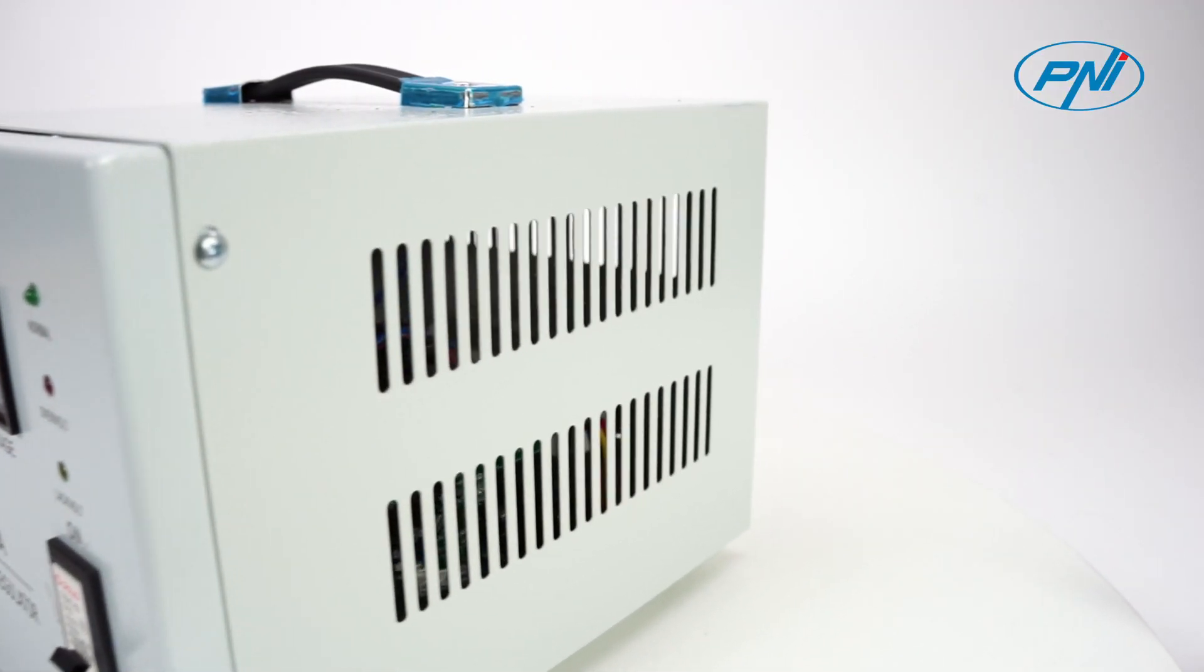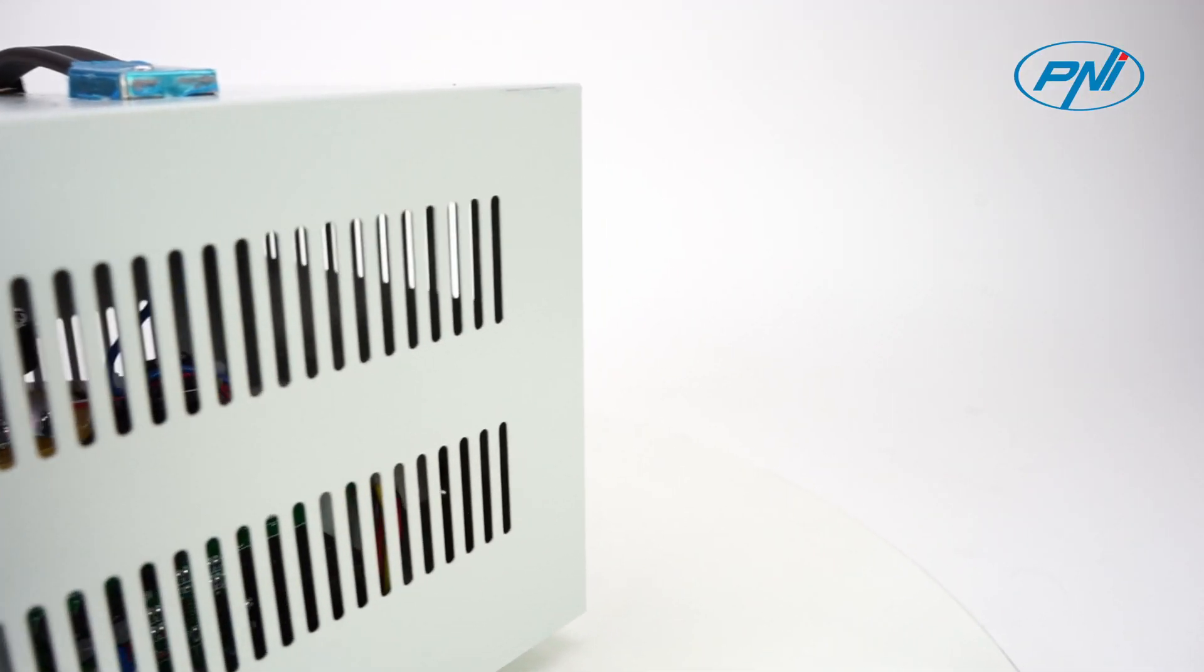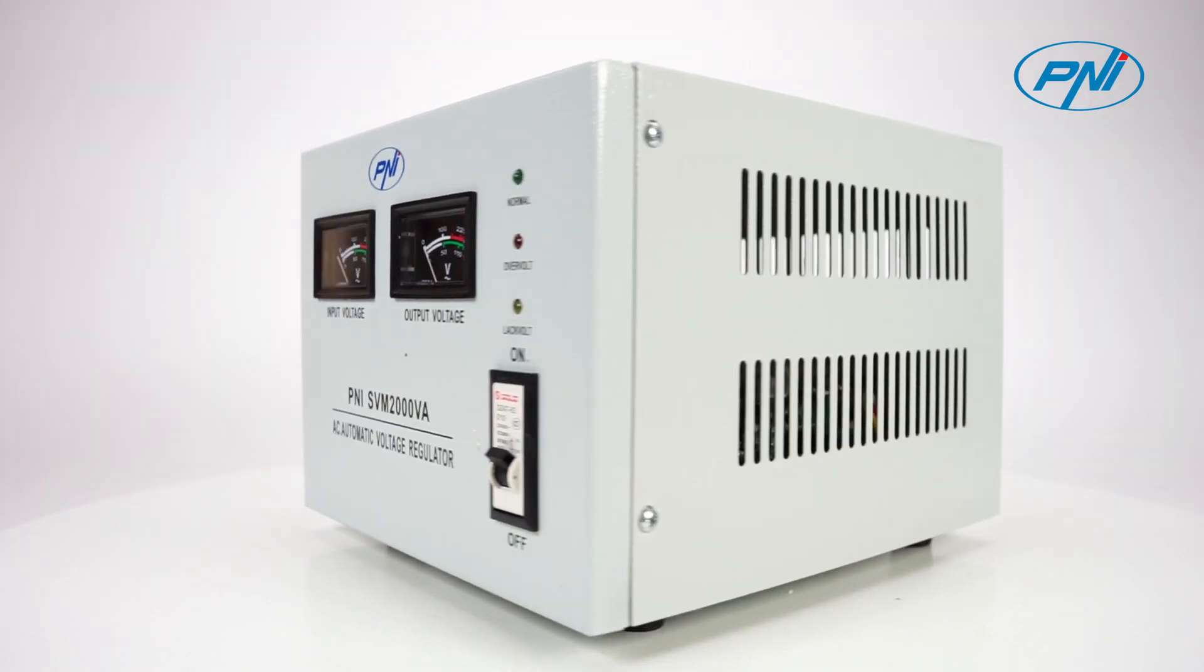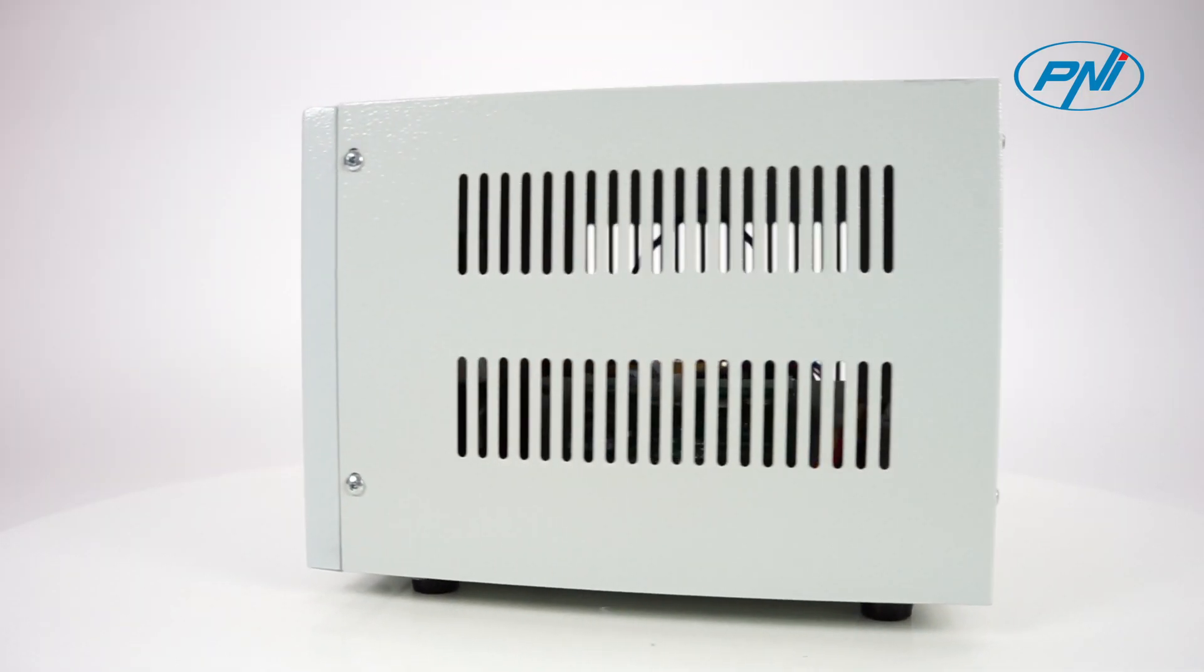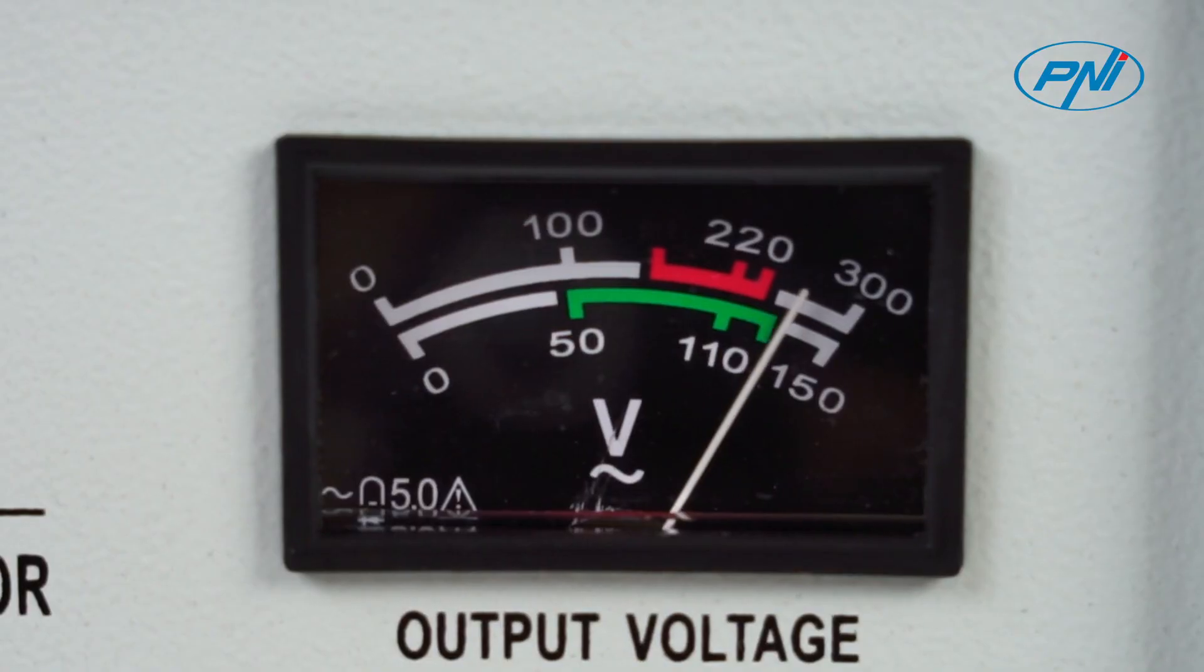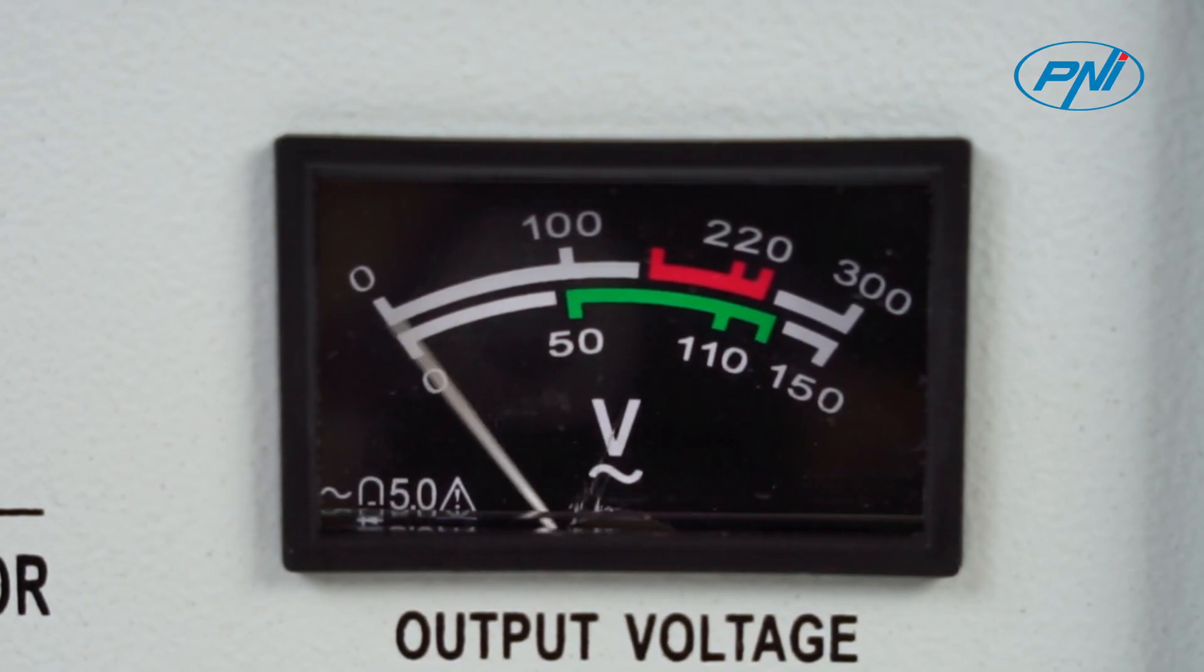The vents on both sides effectively disperse the heat generated in the conversion process. If there is an overload or short circuit, the built-in circuit breaker will cut off the power to protect your devices.